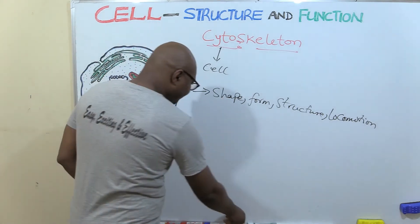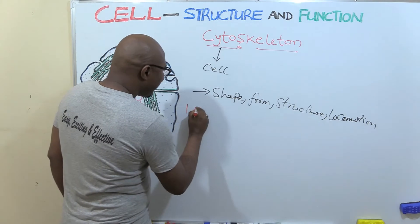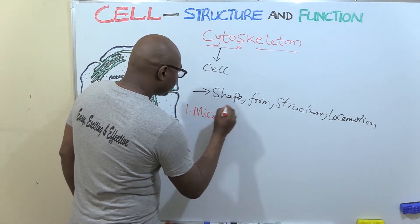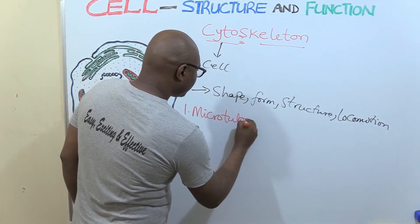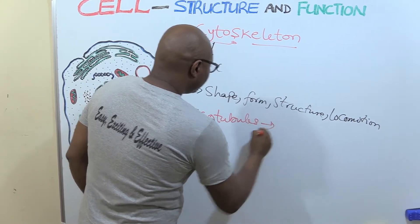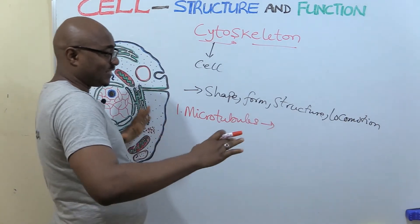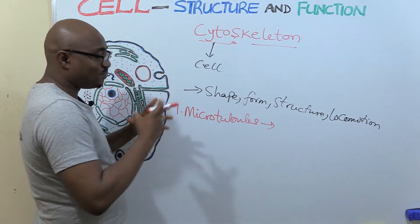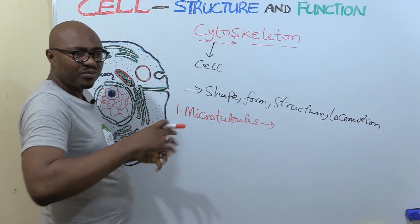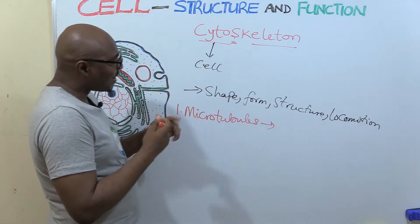One of them is called microtubules. These microtubules, they are actually the largest. So they are differentiated based on the type of protein and the arrangement.